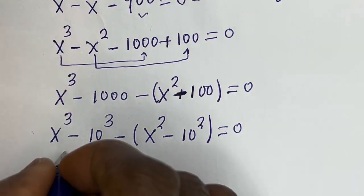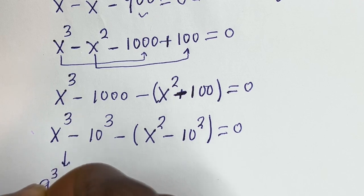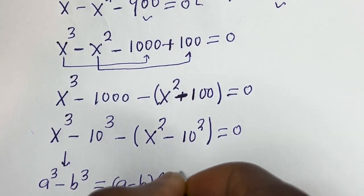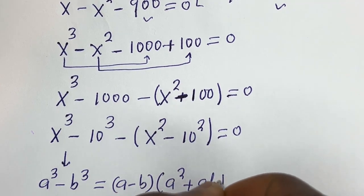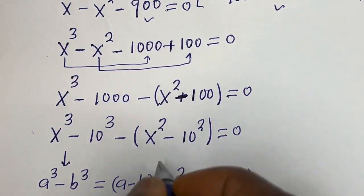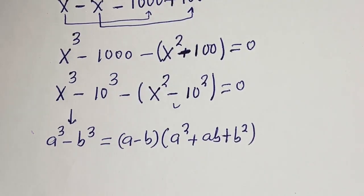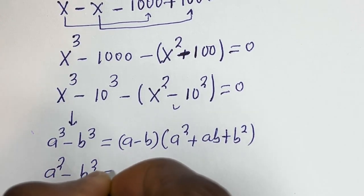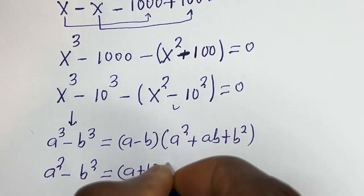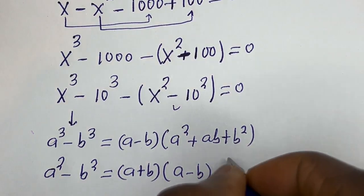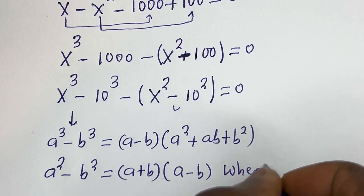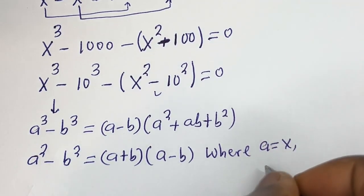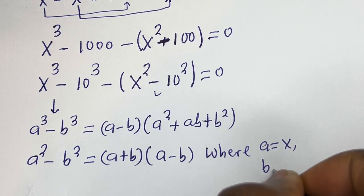Take note that if you have a to the power of 3 minus b to the power of 3, this is equal to (a minus b)(a squared plus ab plus b squared). Also, a squared minus b squared is equal to (a plus b)(a minus b). Here we have a equal to s and b equal to 10.